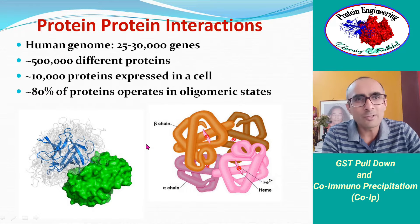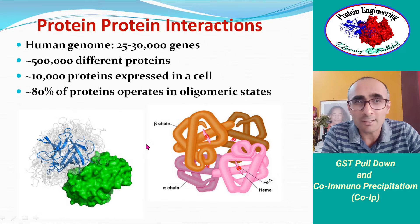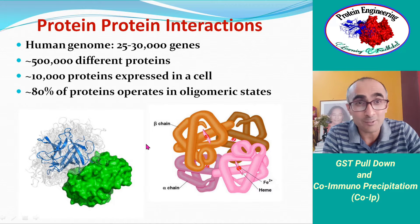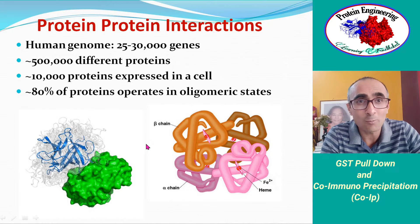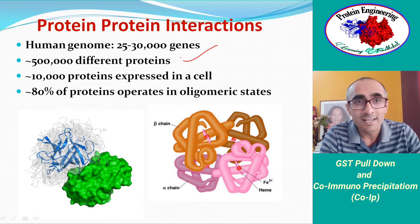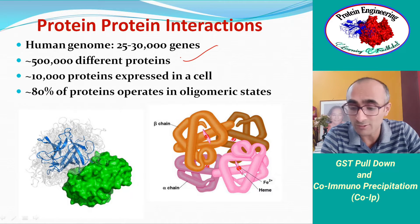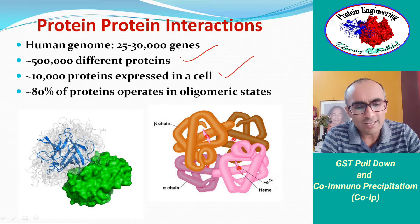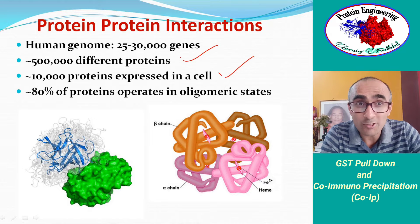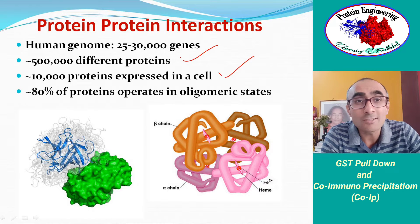The human genome was sequenced in 2001 and there are almost 30,000 protein-coding genes, representing around 1.5% of the total genome. These genes encode for almost 500,000 proteins due to alterations and modifications at the post-transcriptional and post-translational levels. In a given condition in a cell there are almost 10,000 proteins existing — this is what we call the proteome.